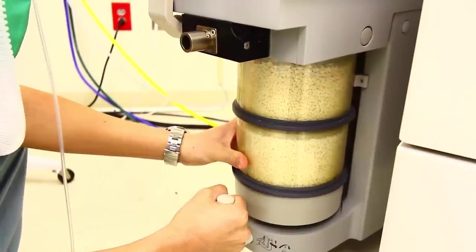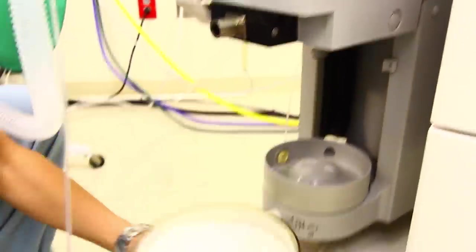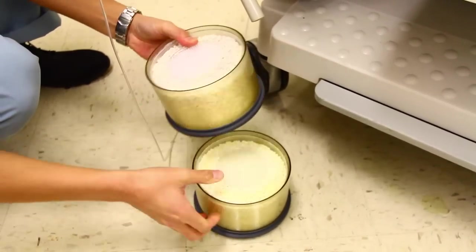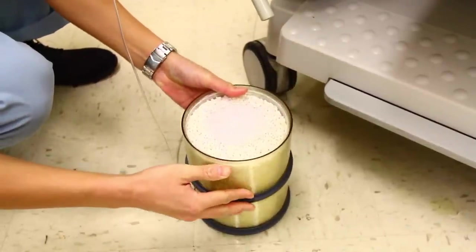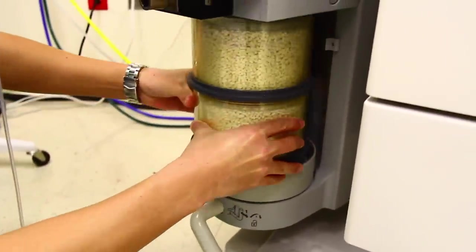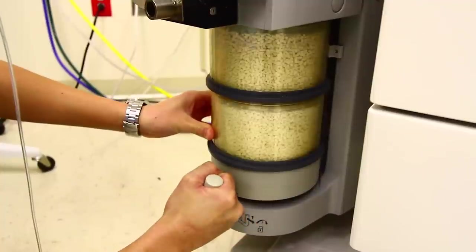To remove the CO2 absorbent canister, you must first pull the handle out and turn it clockwise until it stops. Take each canister and shake it to prevent channeling. Place the canisters on top of each other, place them back into the holder, and turn the handle counterclockwise until it locks.